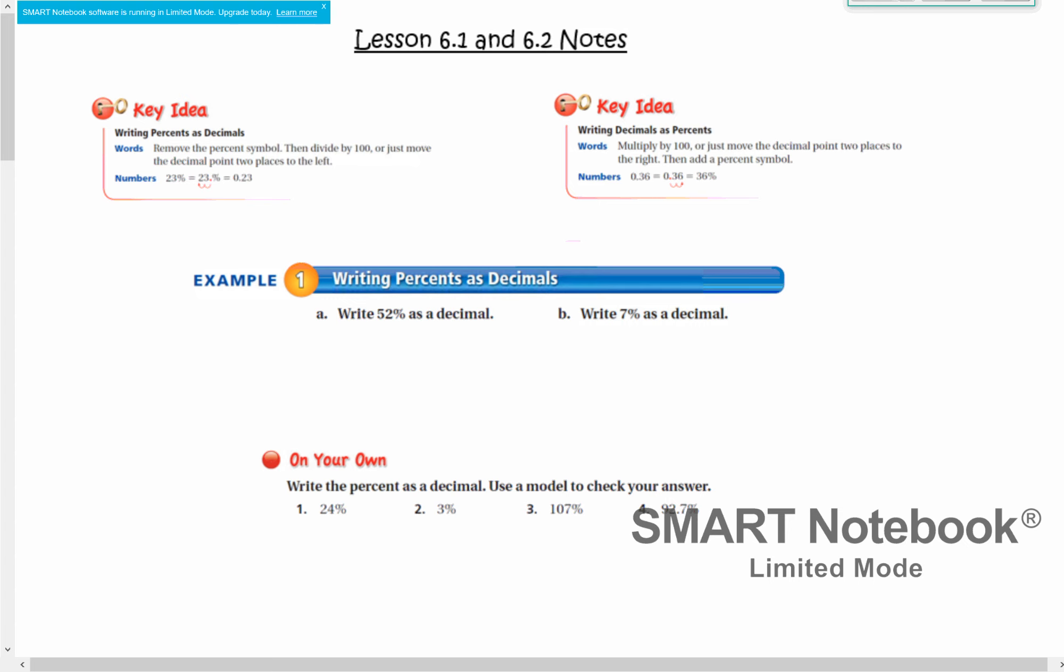We're going to talk about writing percents as decimals. When we write a percent as a decimal, such as 23% as we have in this example, percent is out of 100. So when we do that as a decimal, we're technically dividing by 100 or moving that decimal place two places to the left.